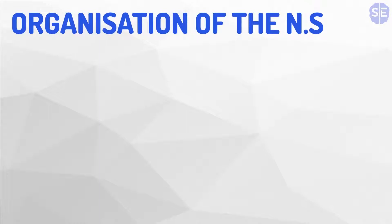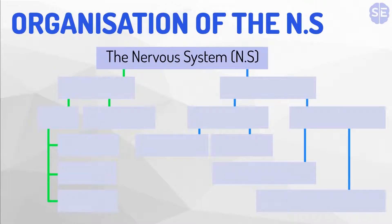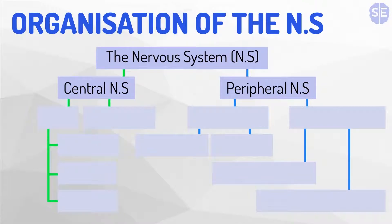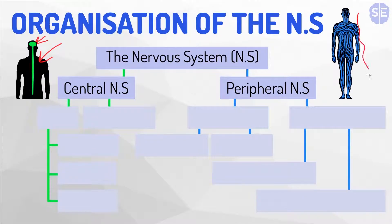On to the overall organization of the nervous system — I'll be explaining the divisions. At the top we have the nervous system, and that splits into the central nervous system and the peripheral nervous system. The central nervous system is shown in green to the left, where you can see the brain and the spinal cord, while the blue on the right is the peripheral nervous system, which covers pretty much the rest of the body.